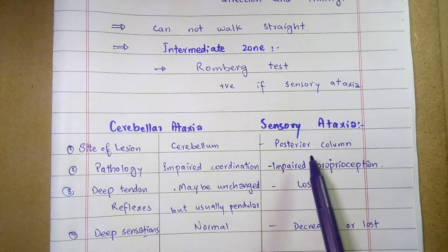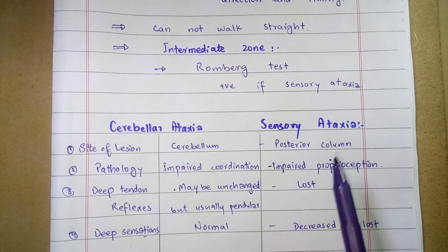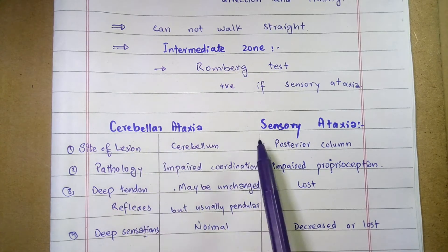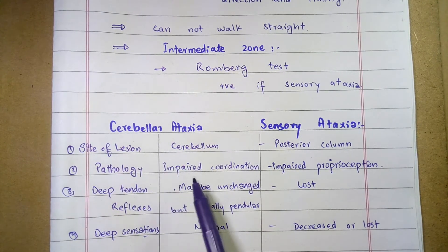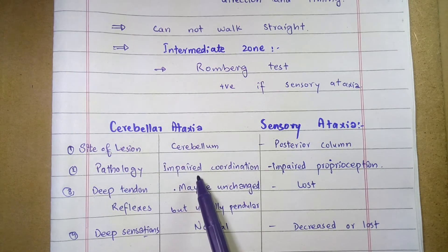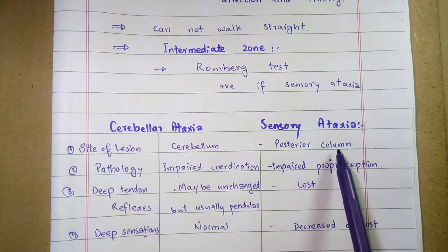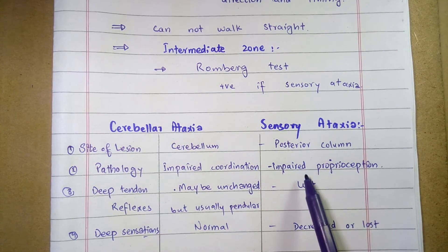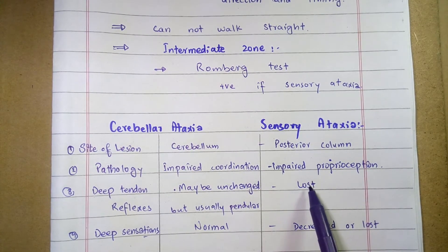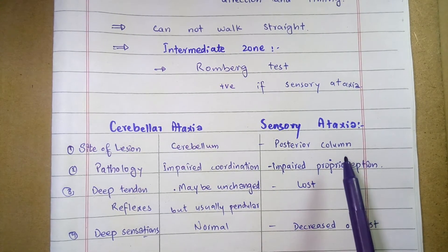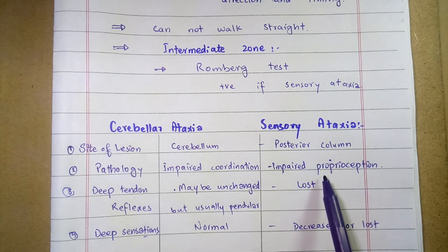Regarding pathology: cerebellar ataxia involves impaired coordination of movements, while sensory ataxia involves impaired proprioception. This is because damage to the dorsal column pathway eliminates the sensation of proprioception.